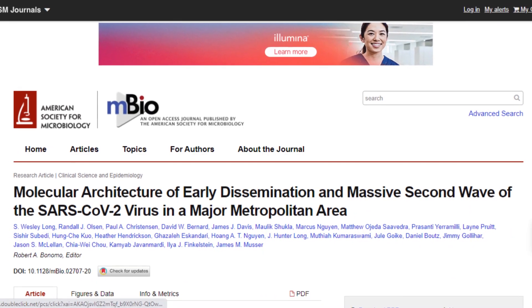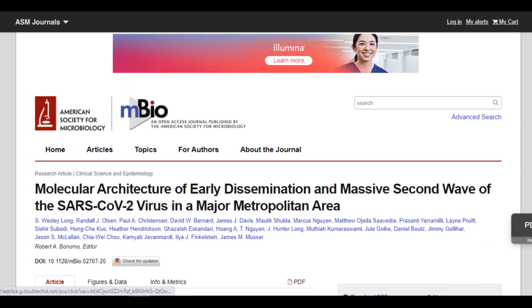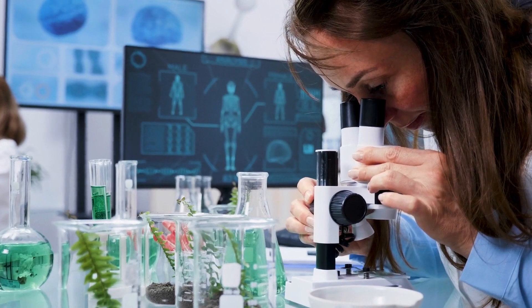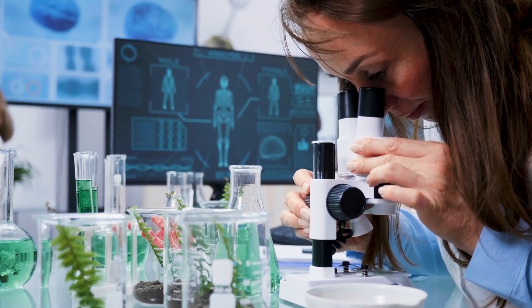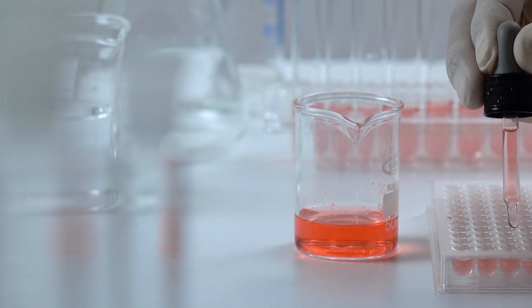In a paper published in the journal mBio, the mutation is called D614G, found in the spike protein. It is a mutation being monitored by experts around the world. Its presence in human communities is traced back to the initial wave of the pandemic.